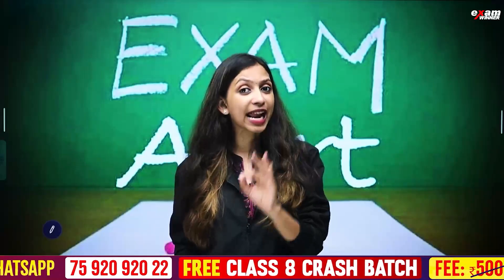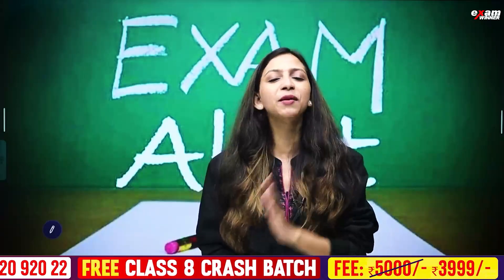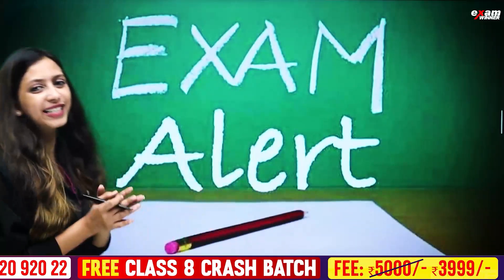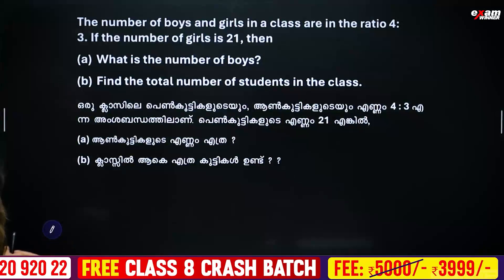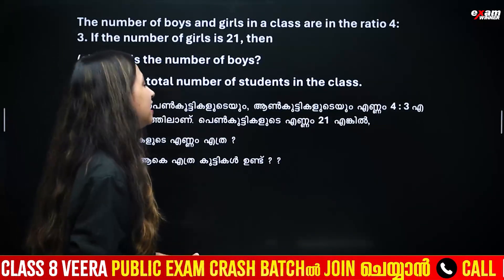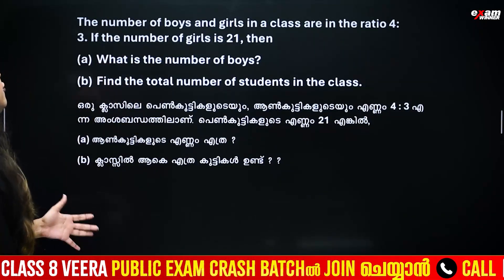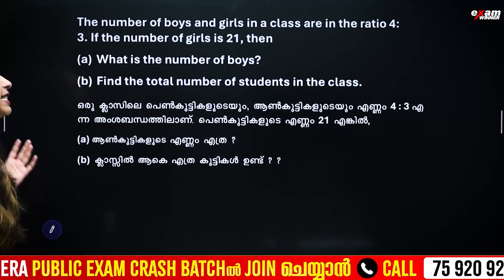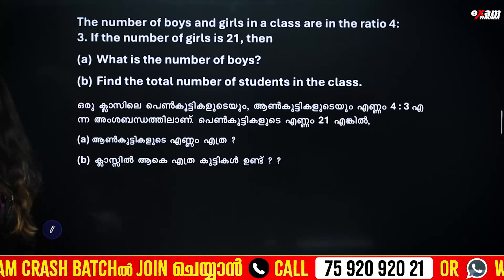We will ask you about the questions in this video. The number of boys and girls in a class are in the ratio 4 is to 3. If the number of girls is 21, then what is the number of boys?